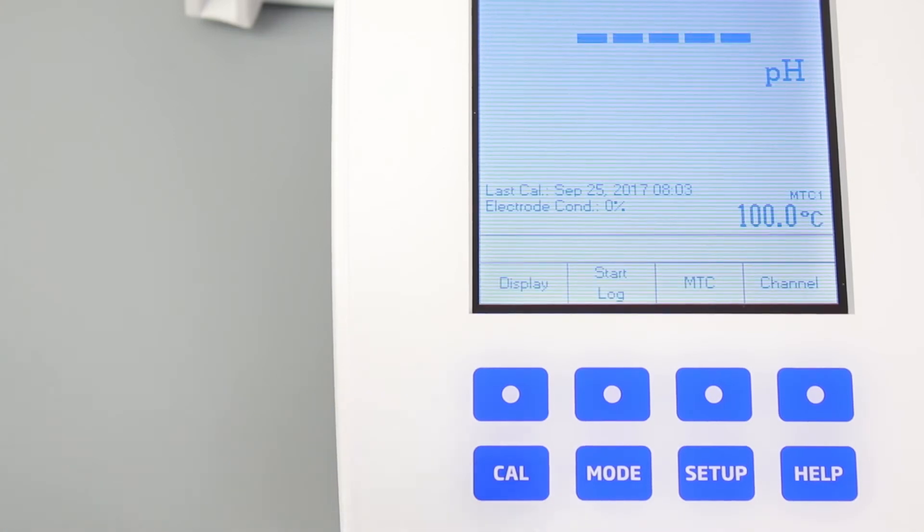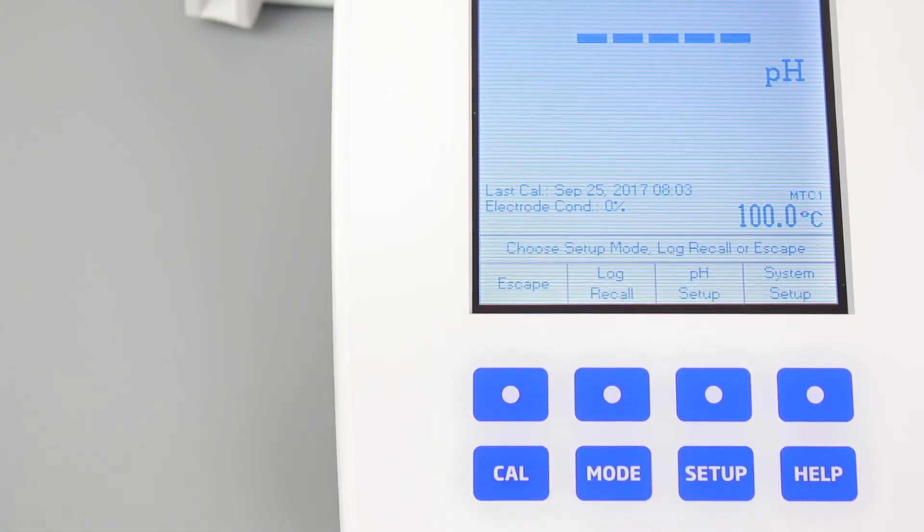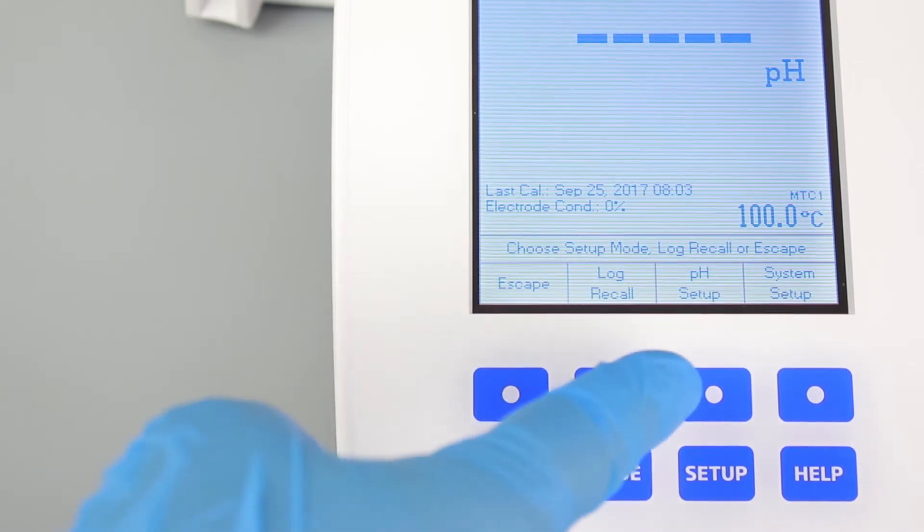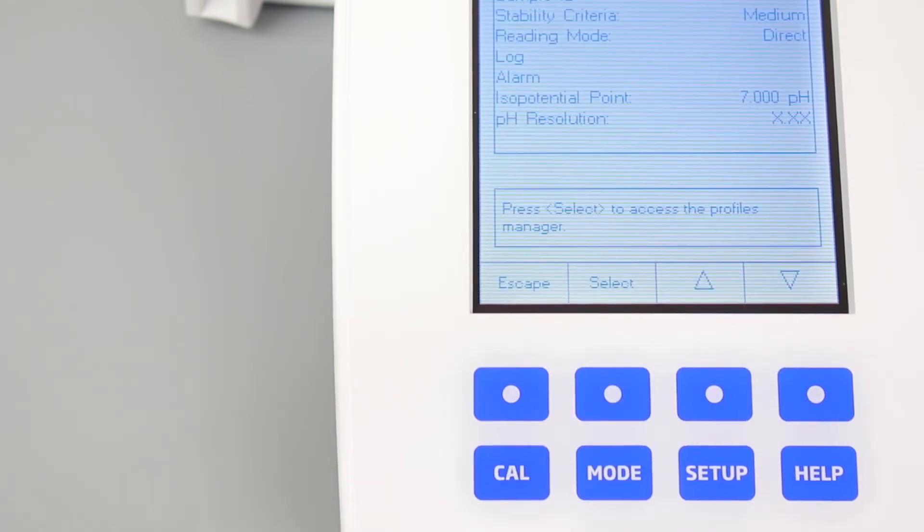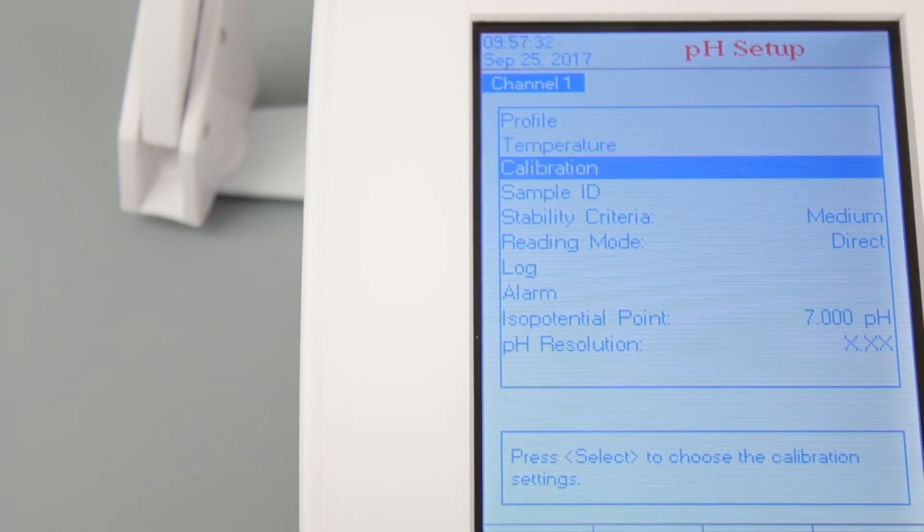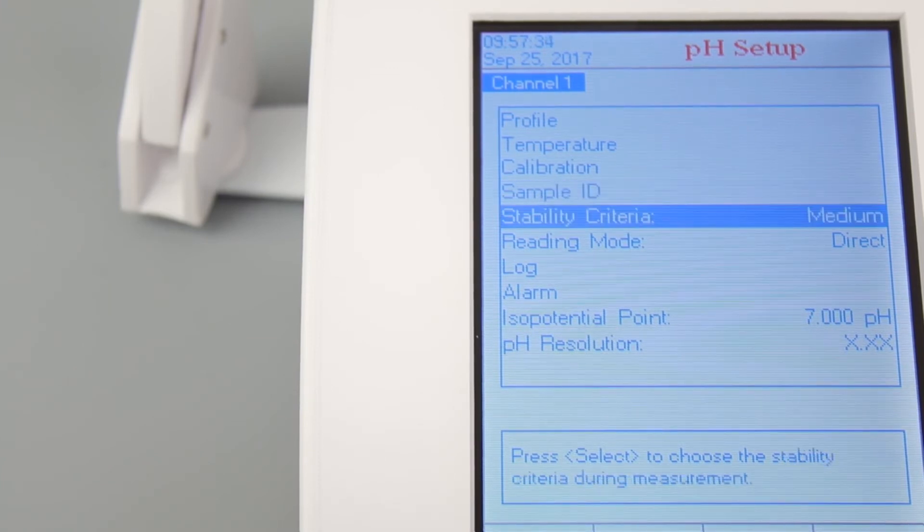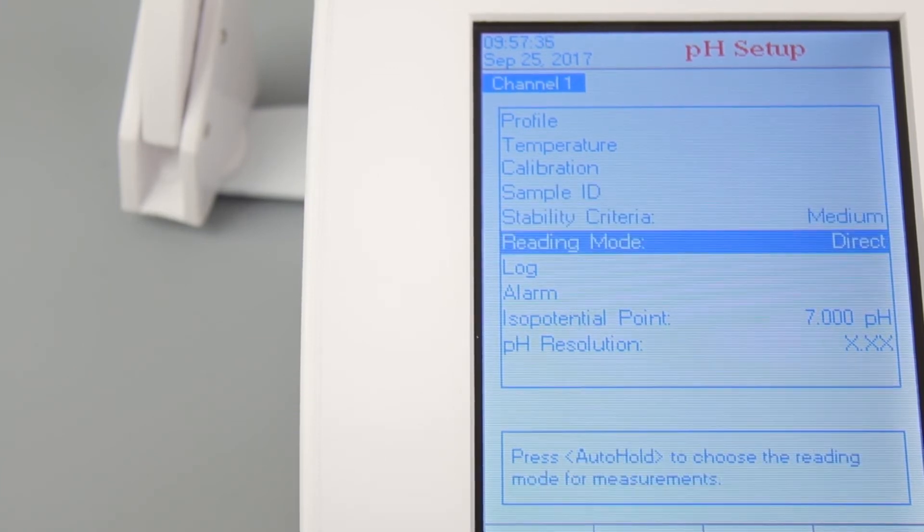Once you have set your preferences, hit ESC, SETUP, and then pH SETUP. This area of the setup menu is where you can change your temperature compensation settings, calibration preferences, and calibration reminders. The pH SETUP menu is a great way for you to ensure best practices for your lab are being followed.